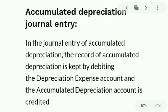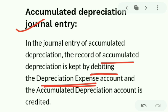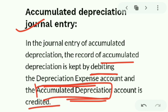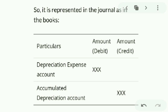The journal entry for accumulated depreciation is: Depreciation Expense Account is debited, and Accumulated Depreciation Account is credited. The depreciation expense account is a debit, while the accumulated depreciation account carries a credit balance.